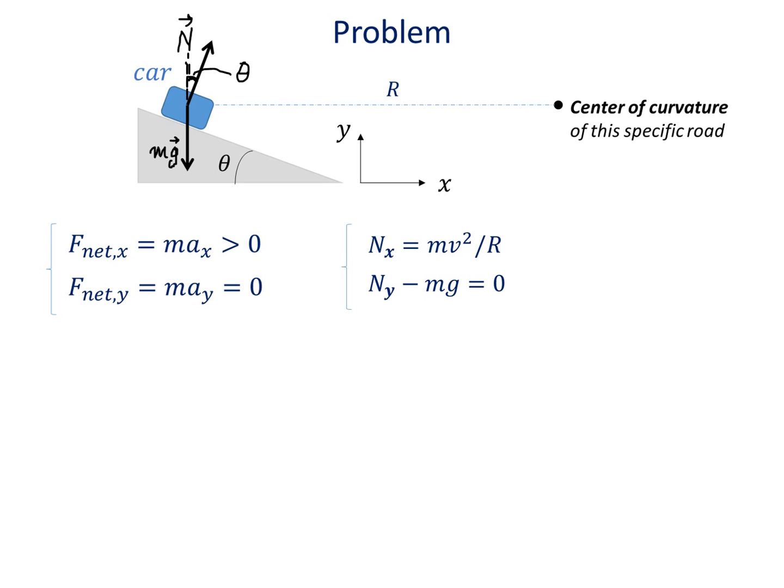So moving on, we can use trigonometry. The angle theta is the same as the other angle theta shown in the figure. Therefore, we can find nx as n sine theta, and ny as n cosine theta.